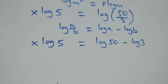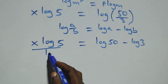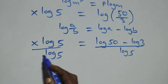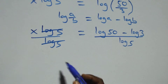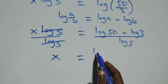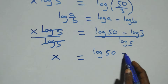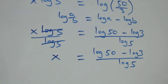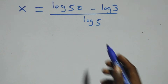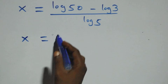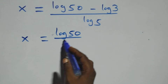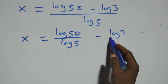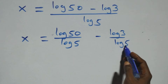Then we divide both sides by log 5, and we have x equals log 50 minus log 3, all over log 5. Next, we separate this into two fractions: x equals log 50 over log 5, minus log 3 over log 5.